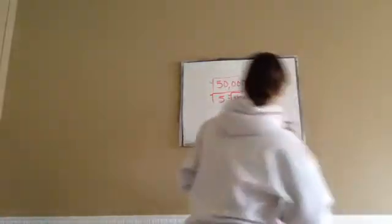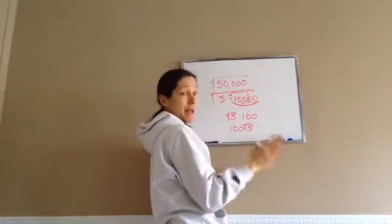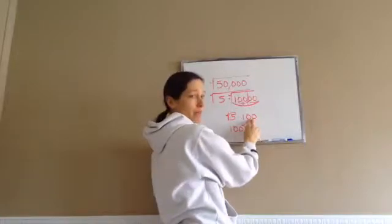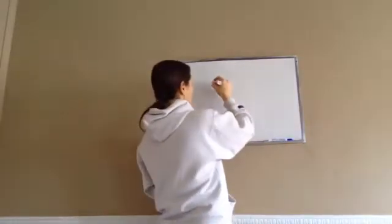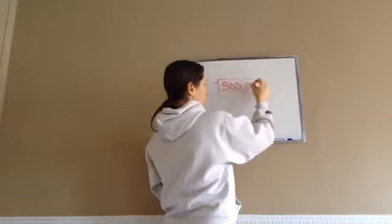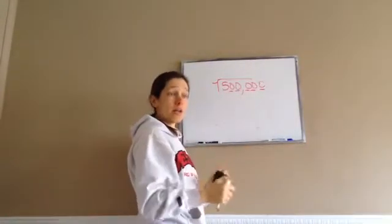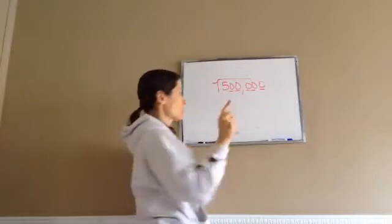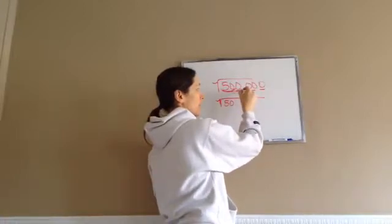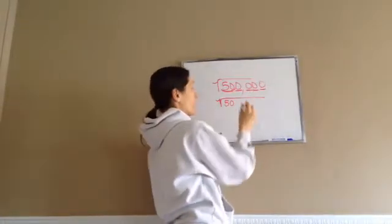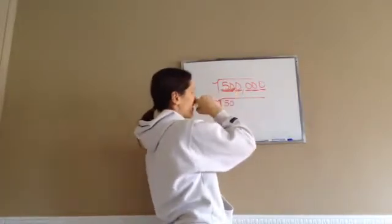Another important thing to notice is how many zeros I had — 4, which is an even amount. That's very important. Look at this next one: 500,000. Count how many zeros: 1, 2, 3, 4, 5. It's an odd number of zeros, so we need to make it an even number. Watch what I do. I'm going to go square root of 50, and that gives me an even number of zeros — 4 of them. I just took one of the zeros and put it with the 5, which made it 50.